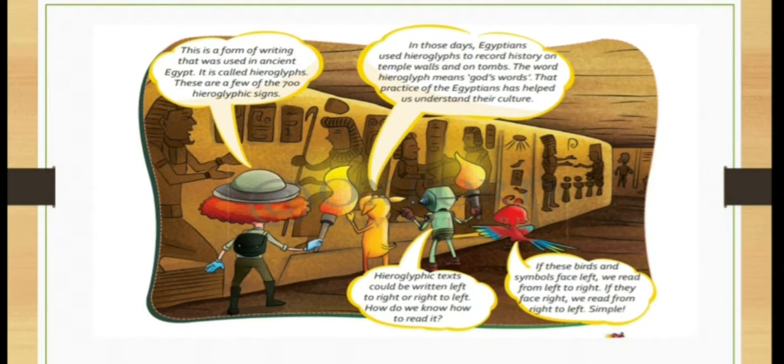This is a form of writing that was used in ancient Egypt. Here you can see this word is used. It is called Hieroglyph. These are a few of 700 Hieroglyph signs. In those days, Egyptians used Hieroglyphs to record history on temple walls and on tombs. The word Hieroglyphs means God's word.